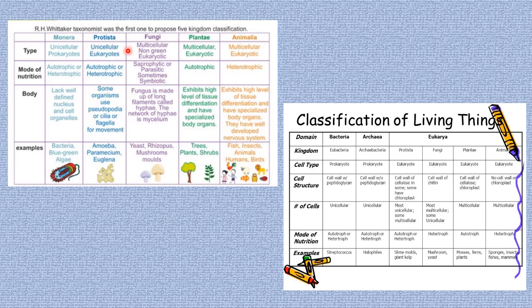Now we'll be looking at the comparison of Whittaker's taxonomy. Starting with the five kingdoms — Monera, Protista, Fungi, Plantae, and Animalia — this gives us a summary description of these various kingdoms based on their types, mode of nutrition, body structure, and examples.